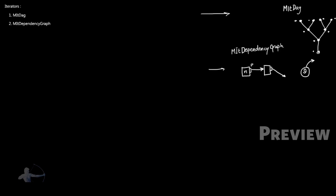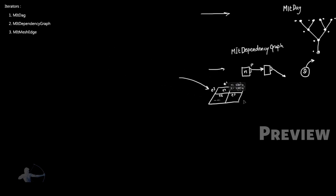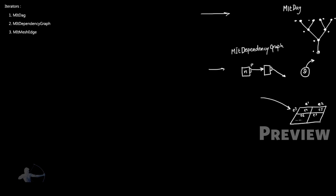The third iterator is MItMeshEdge, and this iterator is used to iterate the edges of a polygon surface — E1, E2, E3, E4, E5, E6, E7, and so on. So MItMeshEdge is used to iterate the edges of a polygon surface.